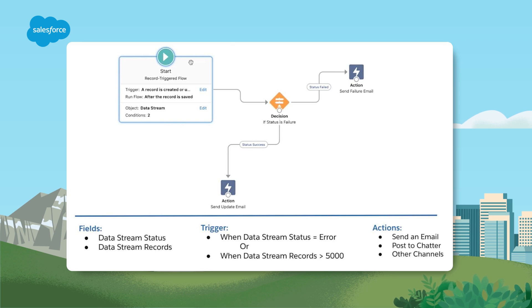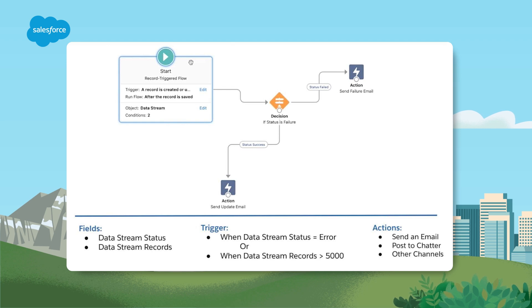Use Salesforce Flow to interact with Data Cloud objects to provide important notifications. For example, get the latest status and information on your Data Cloud usage without viewing the actual reports. Set up notifications that monitor and take action on your Data Cloud instance — you don't have to view object records to receive the latest updates. The following Data Cloud objects are currently supported in Flow Builder: identity resolution, calculated insights, segments, and activations.